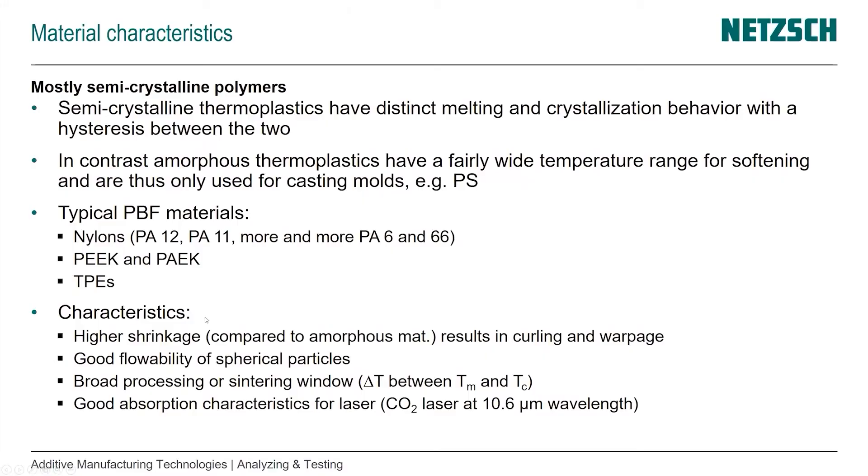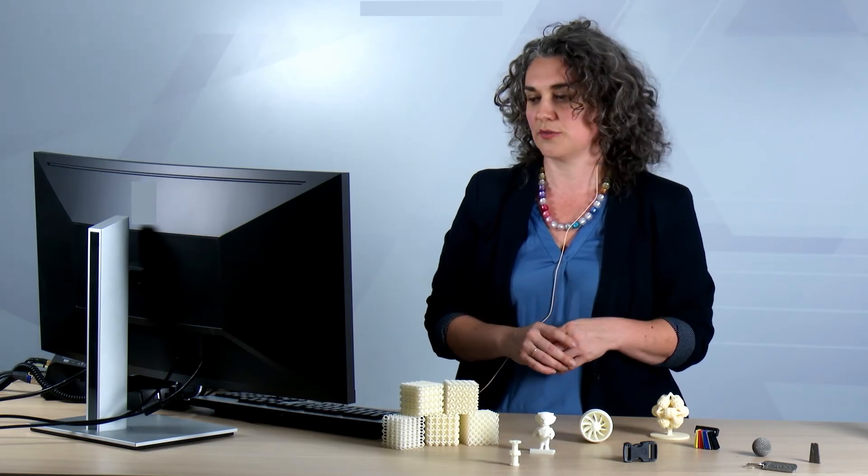The characteristics we need for powder bed fusion: semi-crystalline thermoplastics have higher shrinkage than amorphous materials, resulting in curling and warpage. We have to deal with deformation, and temperature control understanding is super important for these processes.